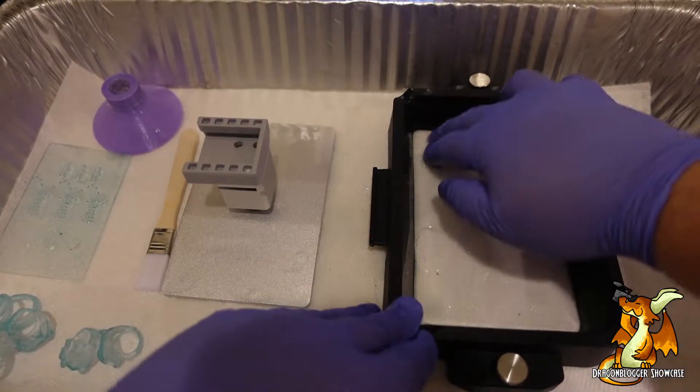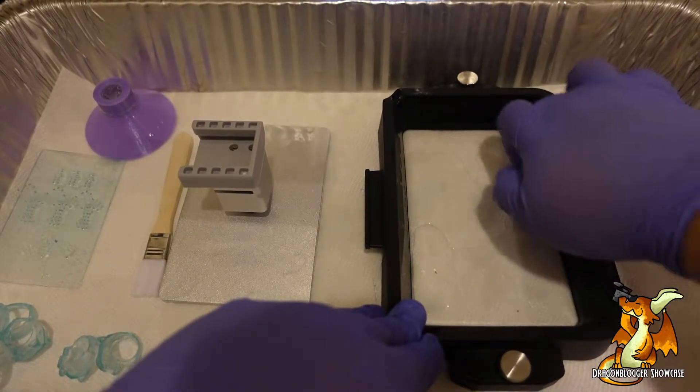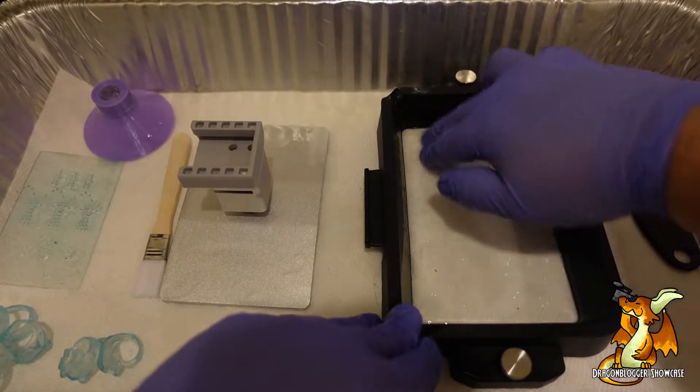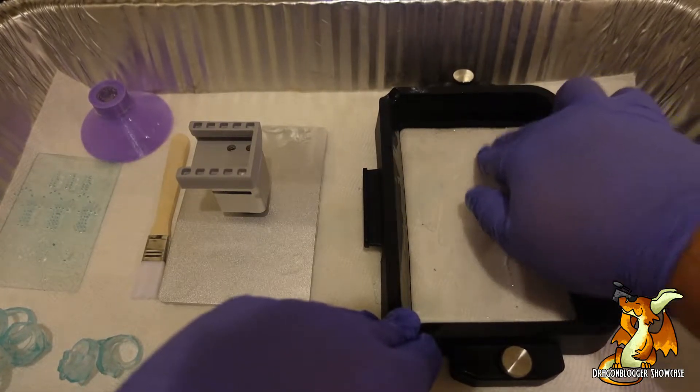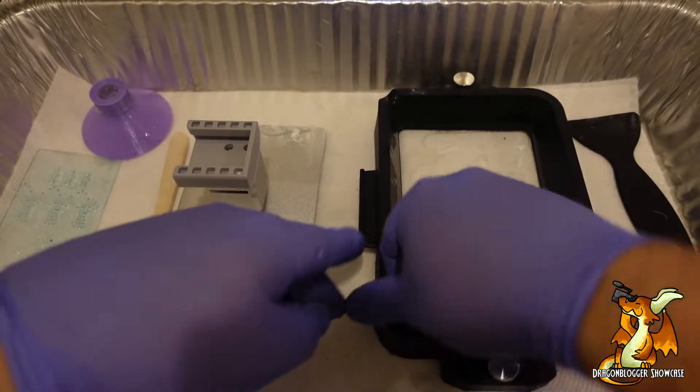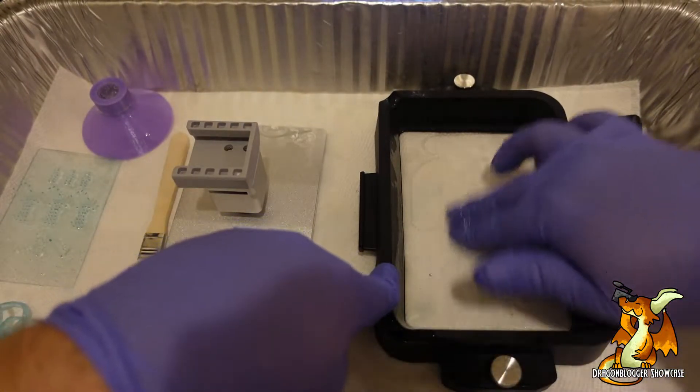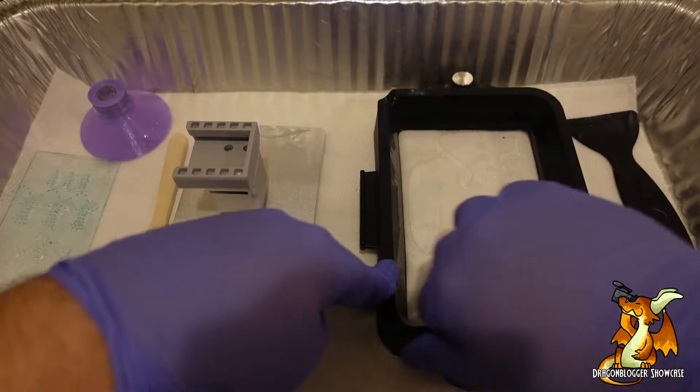We want to make sure we get inside of all these crevices right here on the edge of the build area. That's where resin likes to collect. If you had a good print and it came off nice and cleanly, this is a cake part because there should be nothing here but loose resin.